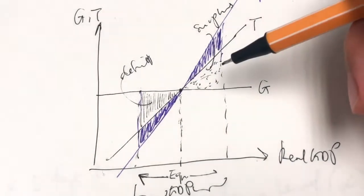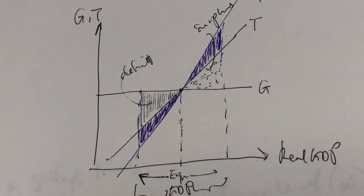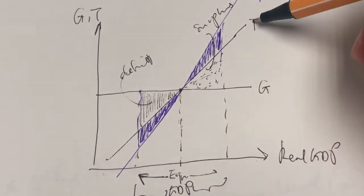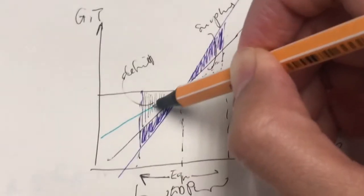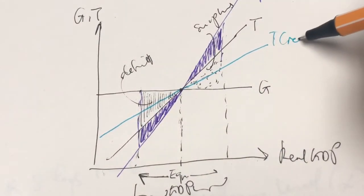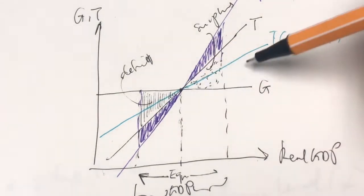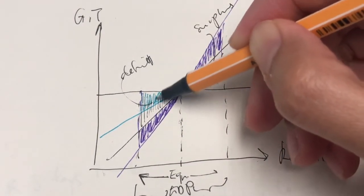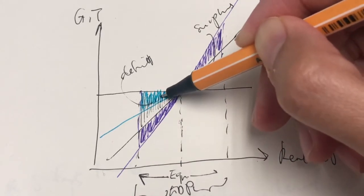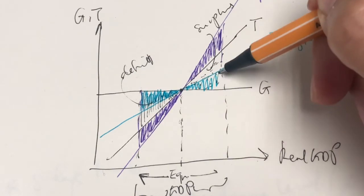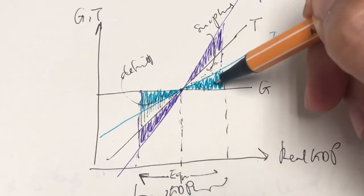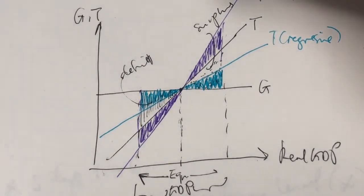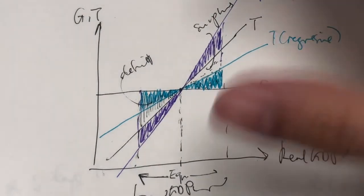Alternatively, with a regressive tax system — where the average tax rate decreases with GDP — the tax line is flatter compared to the original. When we have a recession, the deficit area is smaller, and when we have an inflation, the surplus area is also smaller. The size of the automatic stabilizer affects how fast or slow the economy returns back to normal.